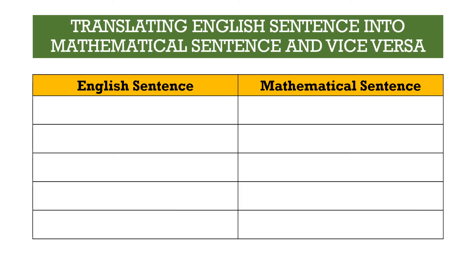Next, let us discuss translating English sentences into mathematical sentences and vice versa. The difference is that for sentences, we include inequalities or the equal sign. For mathematical sentences, we use: equal to, not equal to, and other inequalities. For phrases, we simply write expressions.